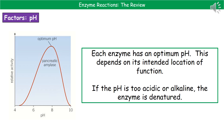The second factor to consider is pH. We typically get a bell-shaped curve with pH because there is an optimum pH at which the enzyme works at its fastest rate. That optimum will be different depending on where the enzyme is designed to work. An enzyme designed to work in the stomach would have an optimum around pH 2, whereas one designed to work in the mouth would be around pH 7. If you go either too acidic or too alkaline from the optimum, the enzyme is going to be denatured, leading to a rapid drop-off in activity.